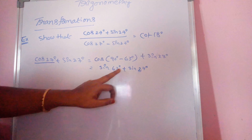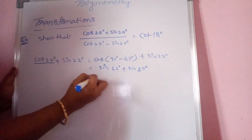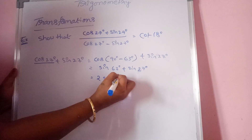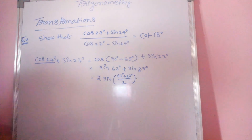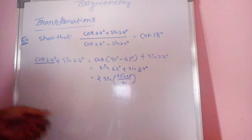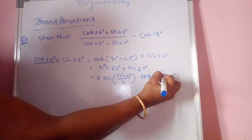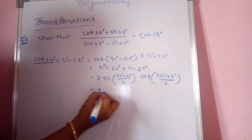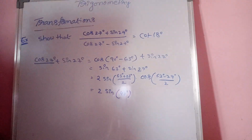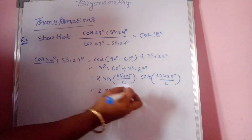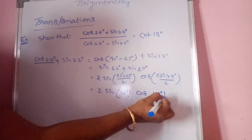This is the sin C plus sin D form. Using the formula sin C plus sin D equals 2 sin((C+D)/2) cos((C−D)/2): here C plus D equals 90, so (C+D)/2 equals 45°, and (C−D)/2 equals (63−27)/2 equals 18°. So this equals 2 sin 45° cos 18°.